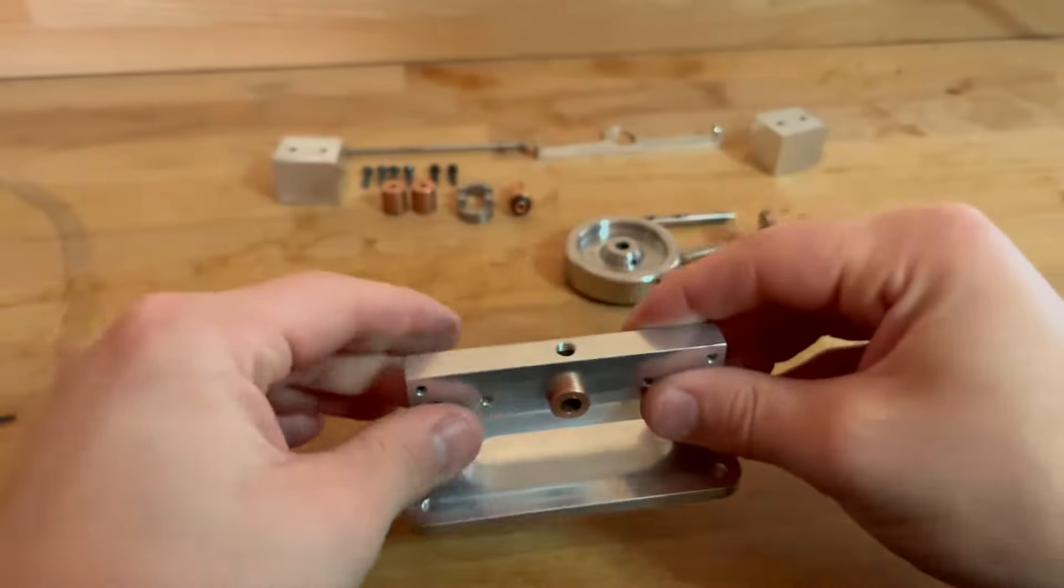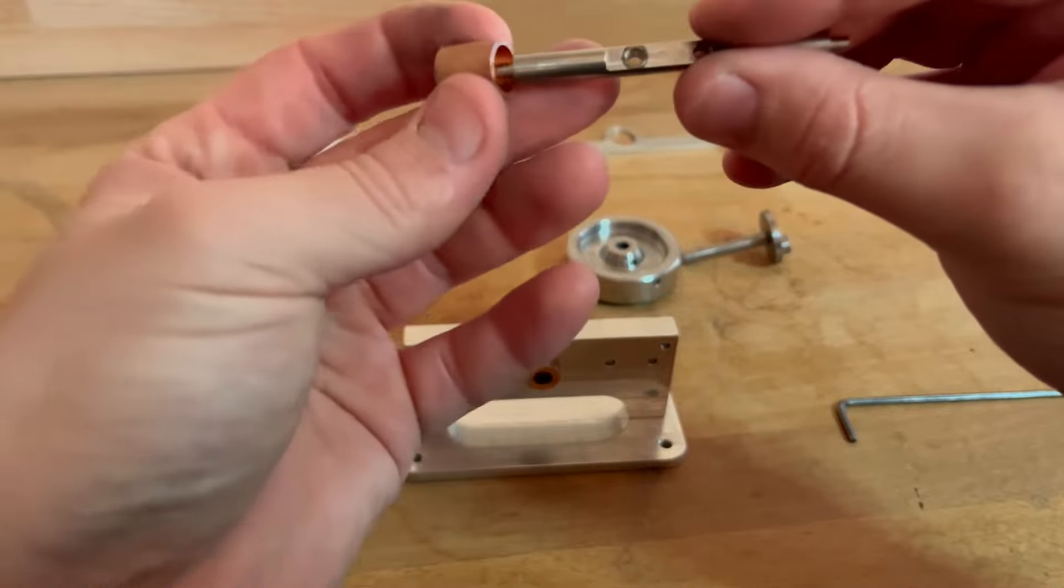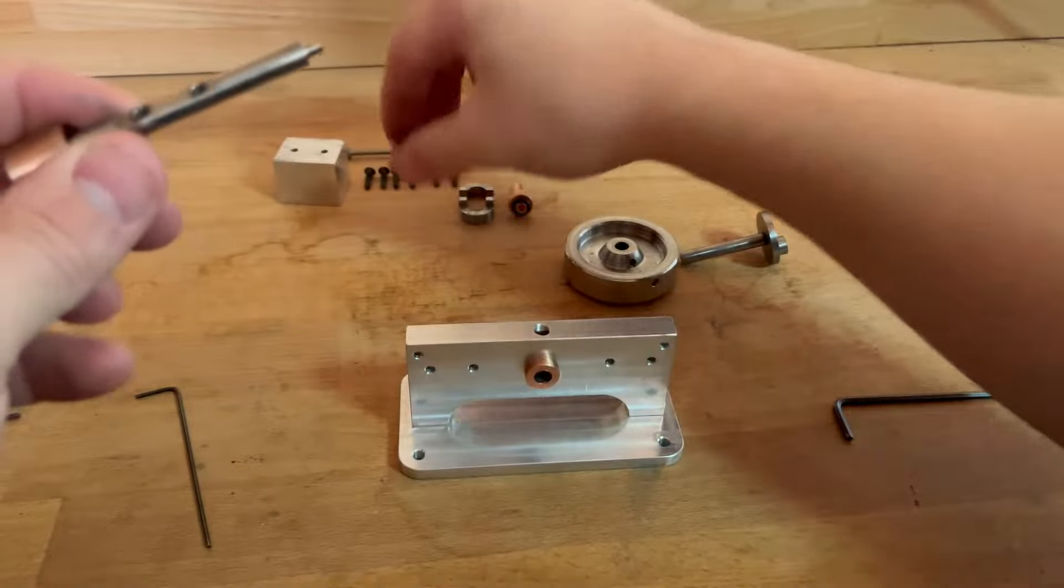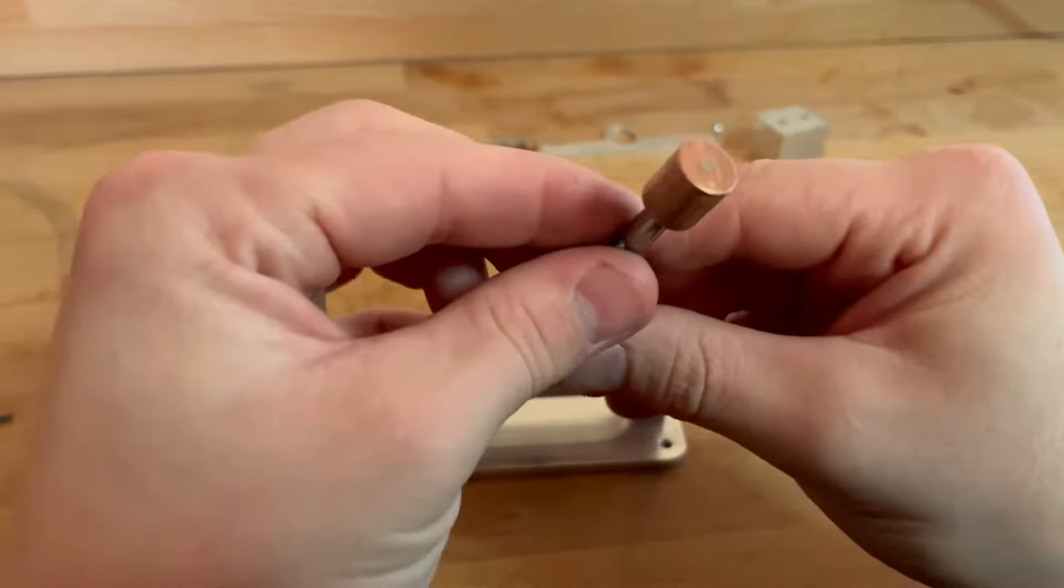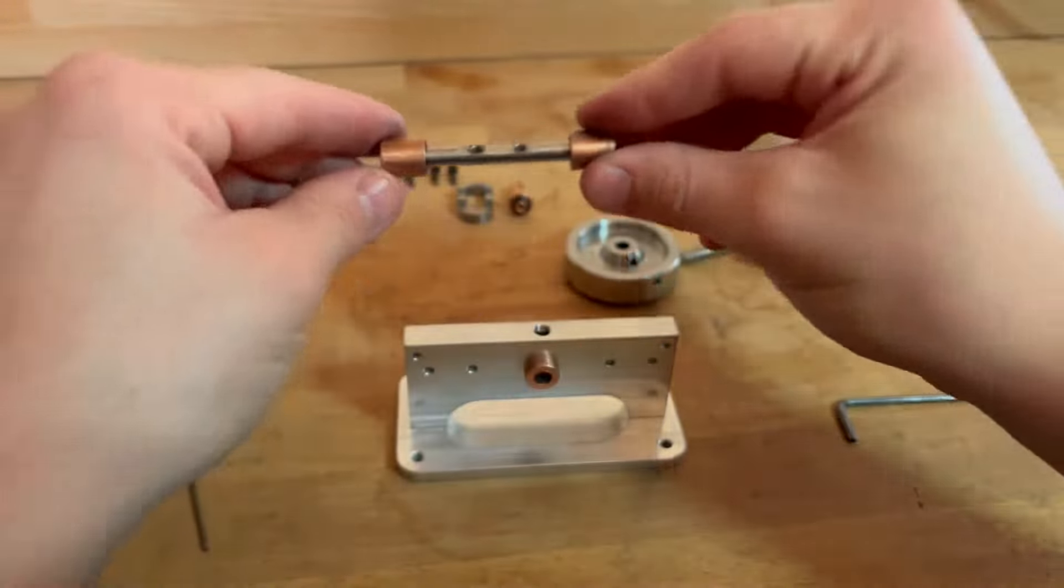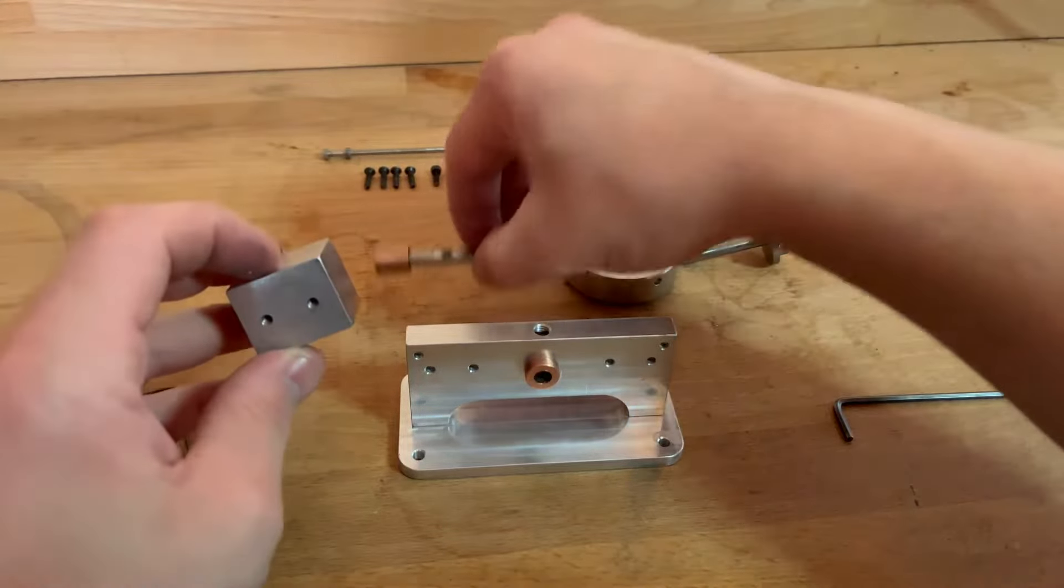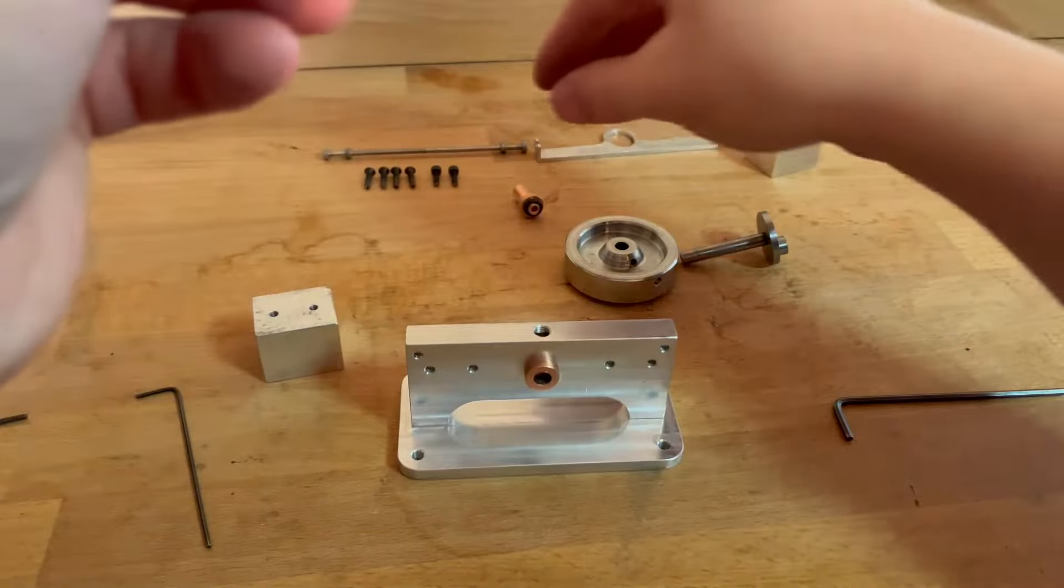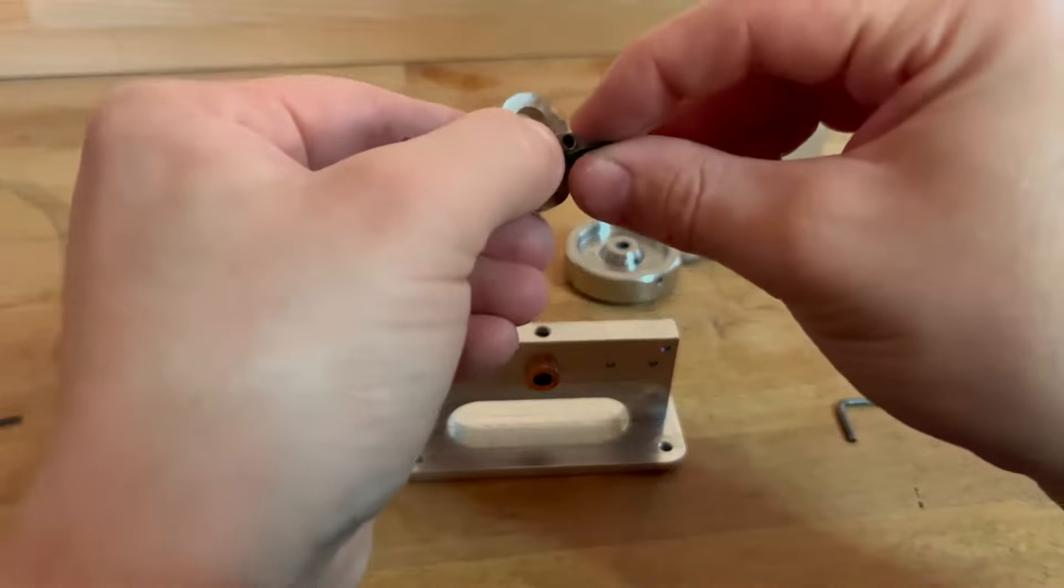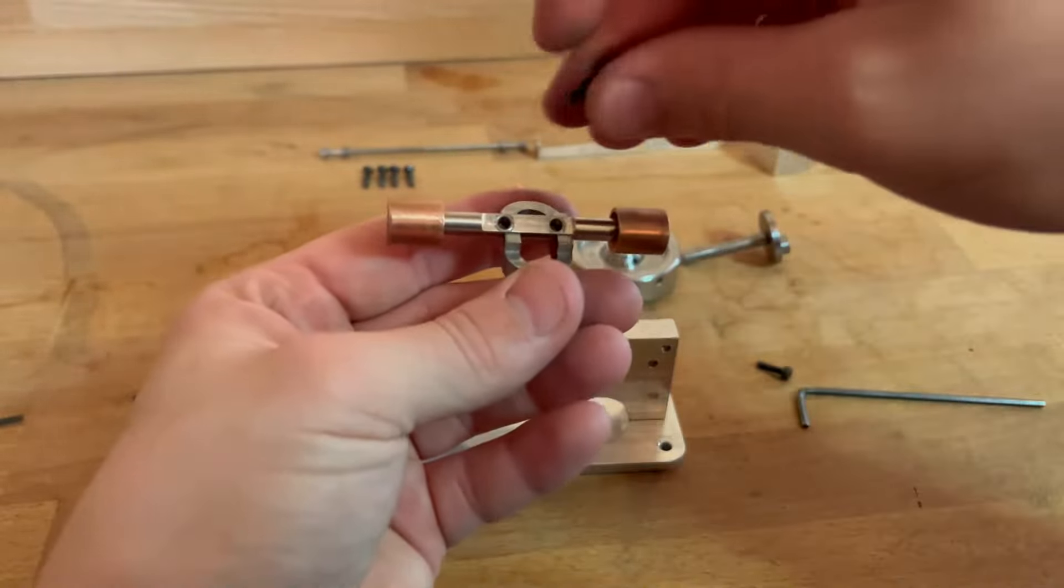So now the next thing we want to do is take the two pistons and assemble them to the connecting rod. They go like this, they just push fit in as well. Then we're going to assemble this to the connector rod, which are here, with the two M3 bolts like so. It's a bit fiddly, this is.